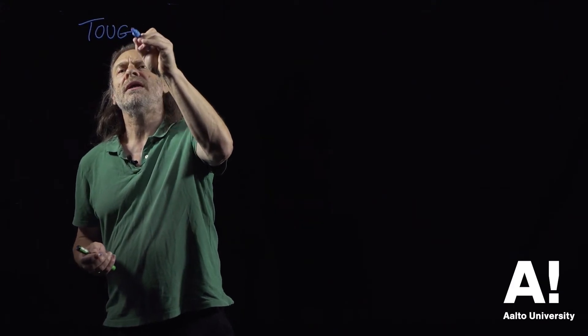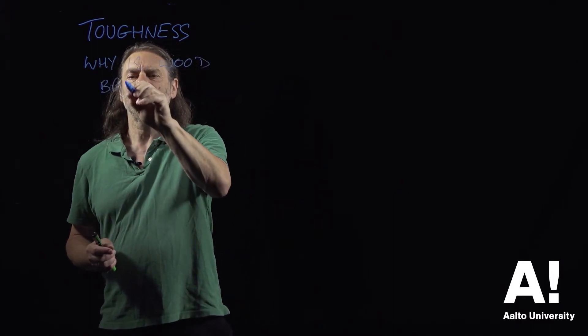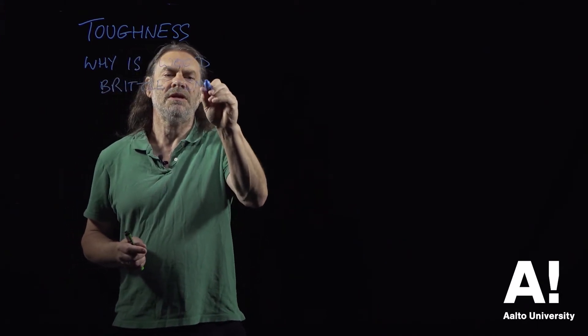We've been looking at the property of toughness, which is a very important property for a material to have. We exploit this a lot in everyday life - we like things to be tough. Metals, composites, and wood all have this property of toughness, but under certain circumstances that property can disappear. So why do we get brittle failure rather than toughness? Why is wood brittle sometimes? We always assume that it's going to be tough under all circumstances.